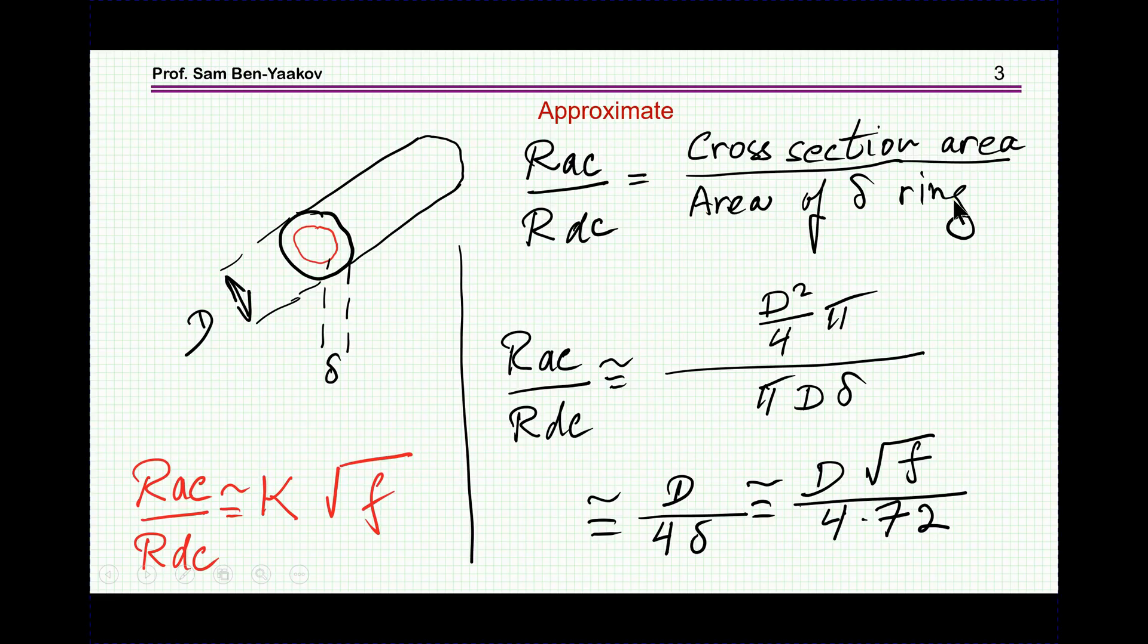So therefore RAC over RDC will be the area of the skin depth of the ring, that is this belt area, will be in the denominator, and then we'll have in the numerator the cross-section area, the total cross-section area. Because one over this is the resistance here, and one over this is the resistance of the whole area.